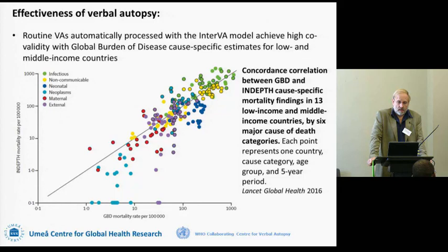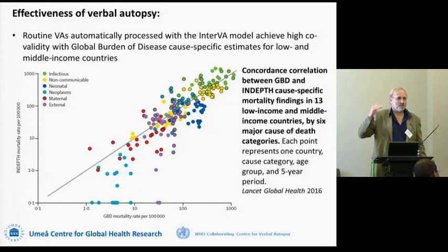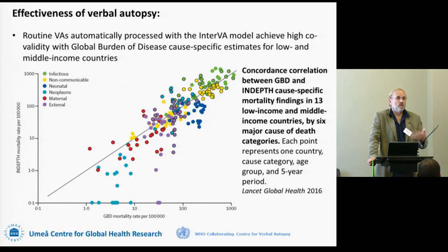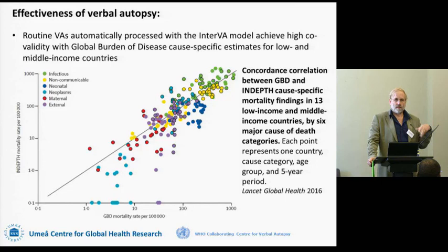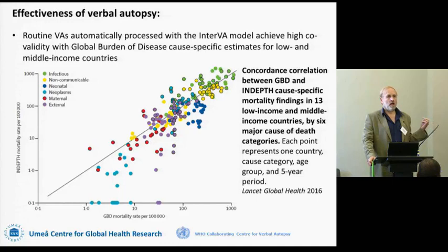This is the headline result. Each point here is one country, cause category, age group, five-year period. It's quite a short article but there's an 80-page appendix with detail cause by cause and country by country. This isn't an absolute validation because GBD estimates aren't absolutely validated — so it's a co-validation. What we're saying is that both the verbal autopsy in-depth sites and the Global Burden of Disease estimates tell a very similar story, even though they follow totally different pathways to get there. We can't say one is better or worse; we're just saying they are statistically very similar on a large scale.